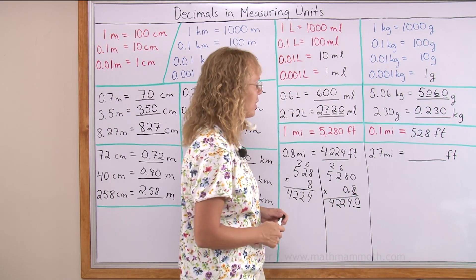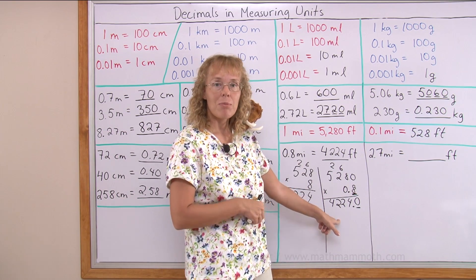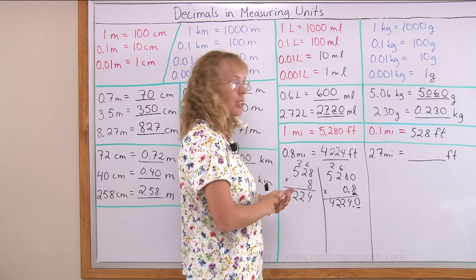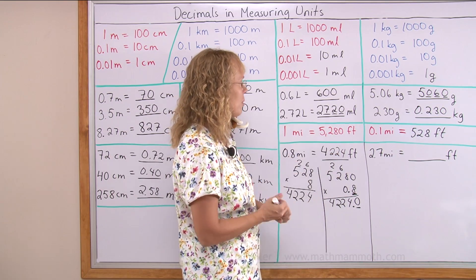About 2.7 miles. How many feet is it going to be? If we use this idea, we will multiply 2.7 times one mile in feet, which is this number. Let's try that.